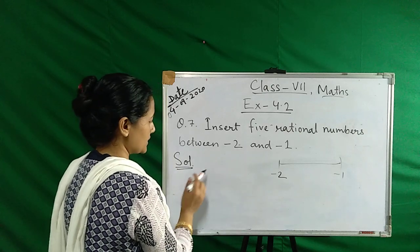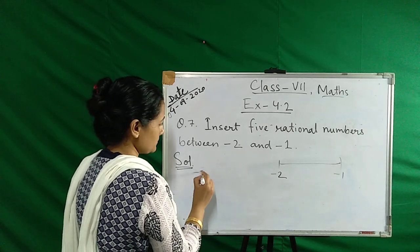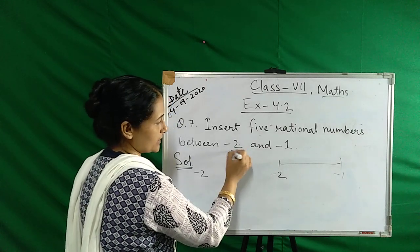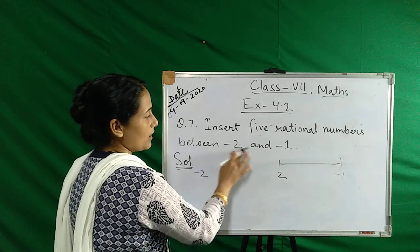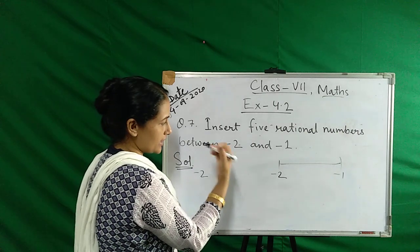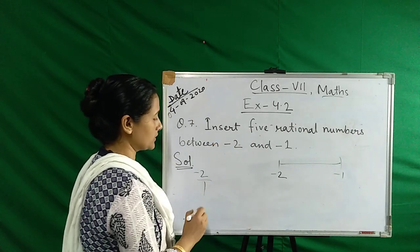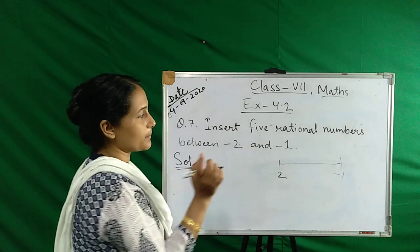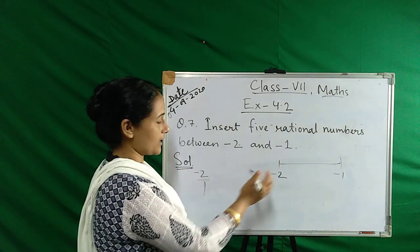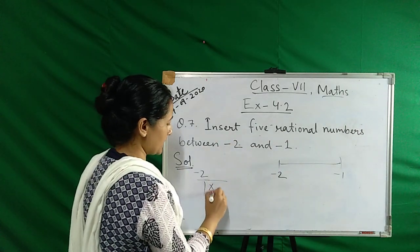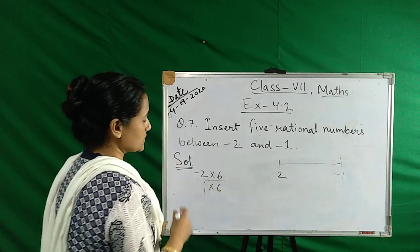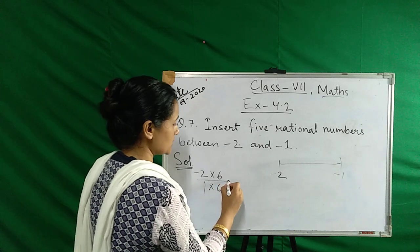Minus 2, but here is no denominator, right? So if there is no denominator, it means there is 1 here. And we need to find five rational numbers, so we need to do six divisions. So we multiply by 6.